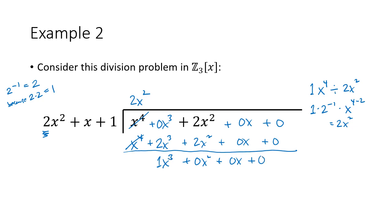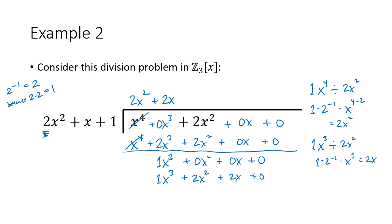Our working remainder has degree 3, so we keep going. 2x squared goes into 1x cubed: that's 1 times 2 inverse times x to the first, which is 2x. So the next term of the quotient is 2x. Multiplying: 2x times 2x squared is 1x cubed, 2x times x is 2x squared, and 2x times 1 is 2x. After subtracting, 0 minus 2 is 1, giving 1x squared, and 0 minus 2 gives plus 1x.